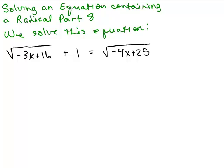This is part eight of solving an equation containing a radical, and in part seven I solved this equation by keeping it the way it was and squaring both sides, thereby isolating the radical on the right. And in this video, I'm going to isolate the radical on the left by subtracting one from both sides.